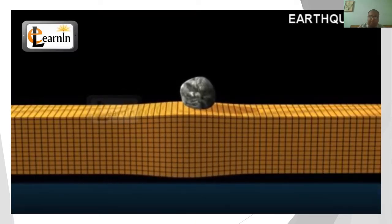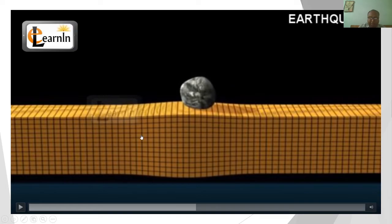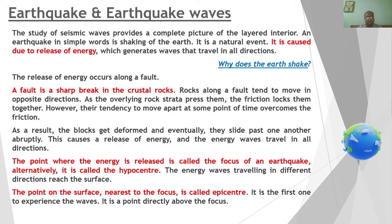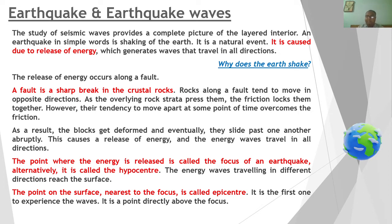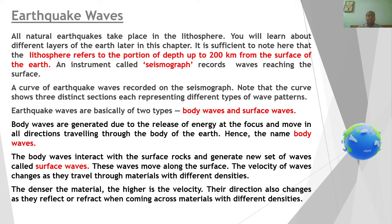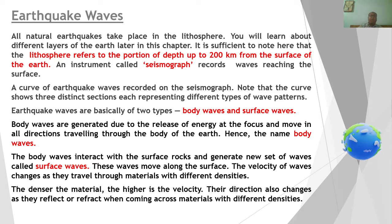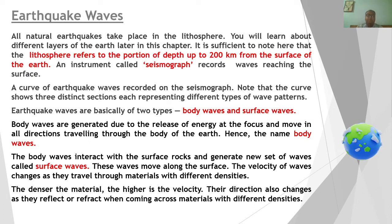To recap: the point where energy is released is called the focus, and the point on the surface where the waves hit first is the epicenter. Now we move on to earthquake waves. We have understood what an earthquake is, how it originates, and the concepts of focus and epicenter. Next we will understand earthquake waves.